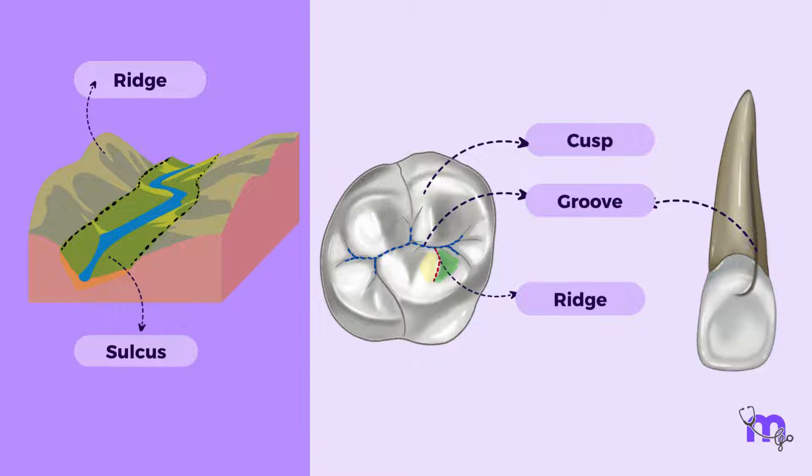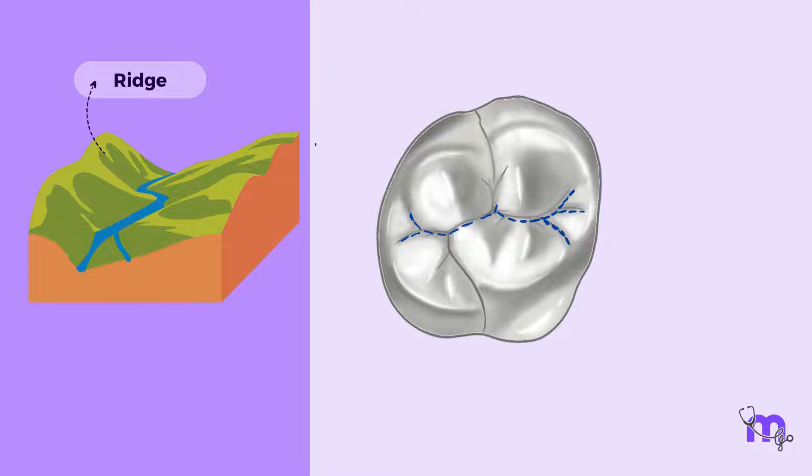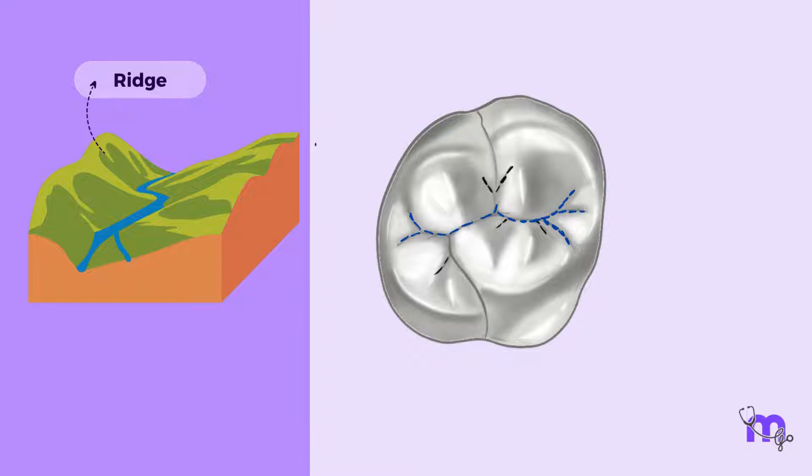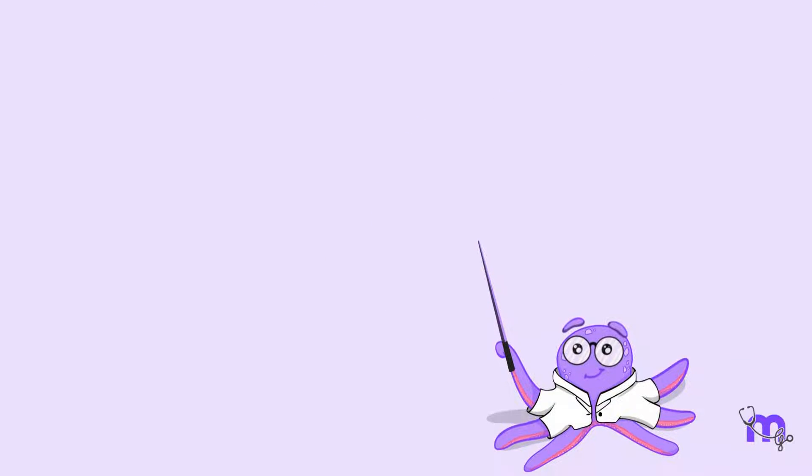Now, imagine smaller trails and streams running alongside the main path in a valley. These are referred to as supplemental grooves that accompany the developmental grooves. These grooves, although less distinct, are like hidden trails that add texture and intricacy to tooth surfaces.